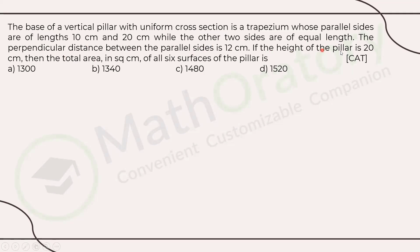The perpendicular distance between the parallel sides is 12 centimeters. All of this information is about the trapezium, the base of the pillar. Now, if the height of the pillar is 20 centimeters, so now we get to know the third dimension of the pillar. We're looking for total area in square centimeter of all the six surfaces of the pillar. So basically, we're looking for the total surface area.